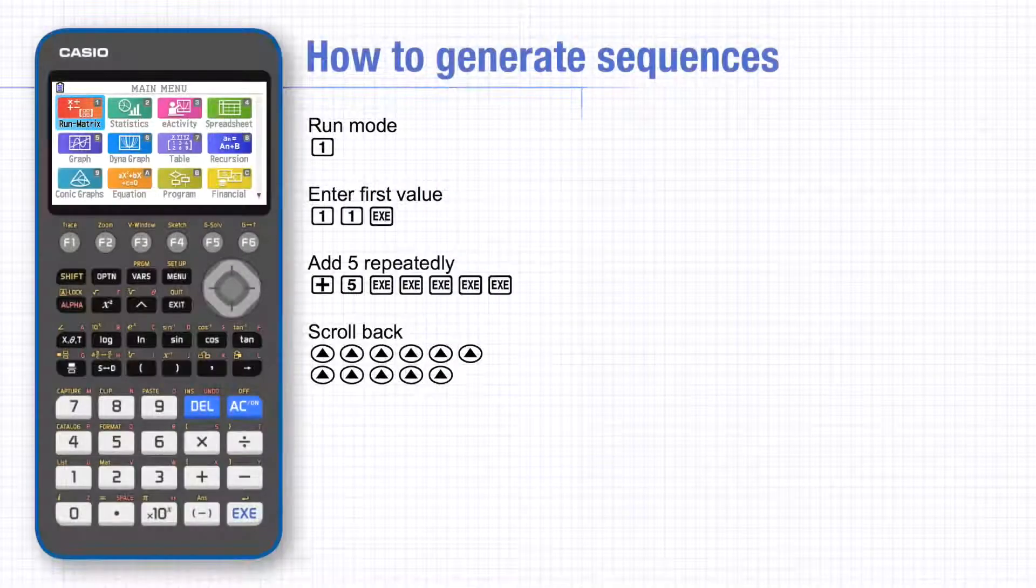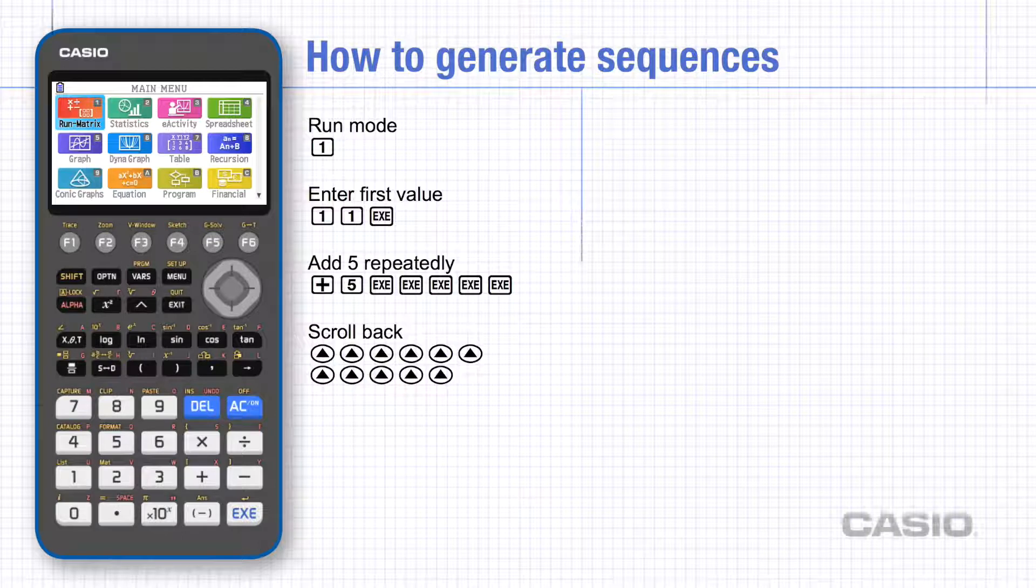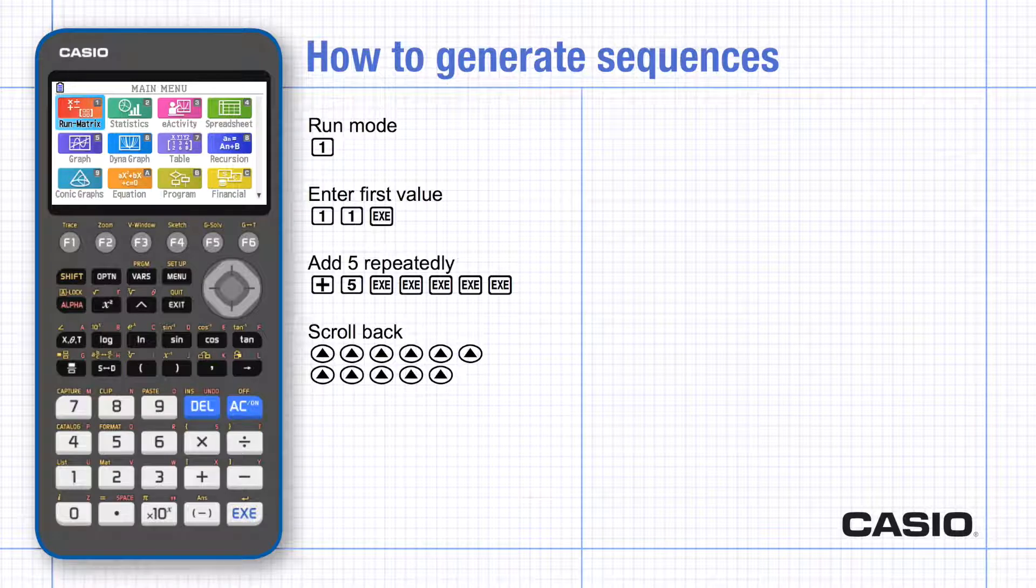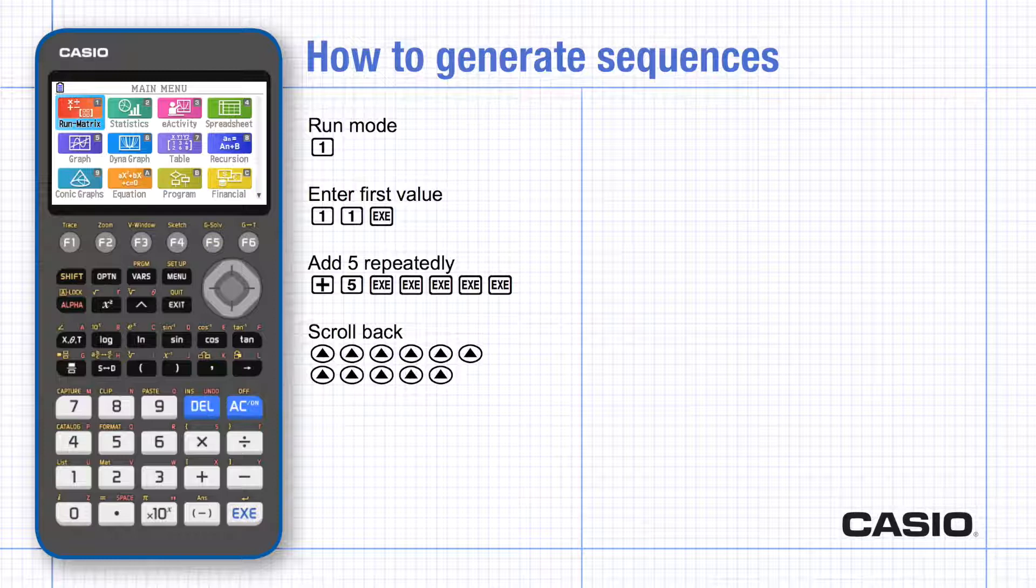In this tutorial we'll be looking at generating sequences using a term-to-term rule inductively. Using the answer key can be useful, as can the recursion mode, so this tutorial looks at both these methods.